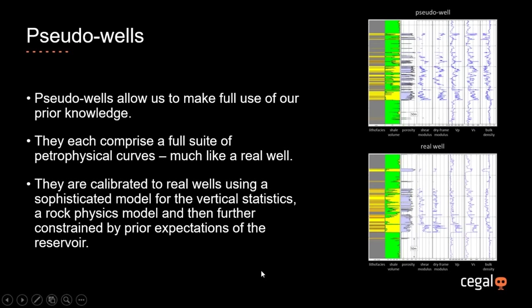The way Odyssey does this is to generate pseudo wells which are fully consistent with all prior knowledge. Each pseudo well comprises a full suite of petrophysical curves, very much like a real well — that's why we call them pseudo wells. They are each calibrated to real well data. We use a sophisticated model for the vertical statistics and a rock physics model to build up the full suite of curves. The range of properties is constrained by our prior expectations, and a lot of effort is put into making these pseudo wells as geologically realistic as possible.